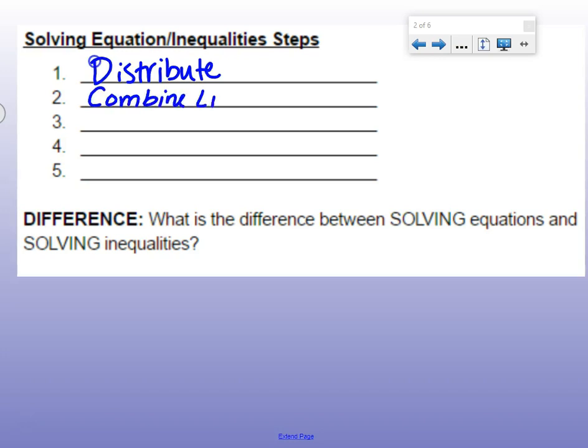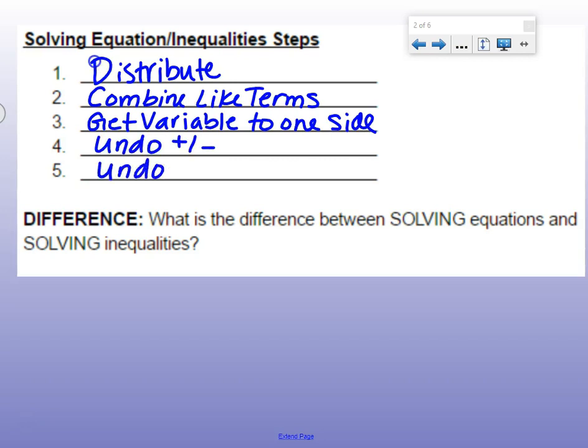Number three get variable to one side, number four undo addition and subtraction, number five undo multiplication and division.